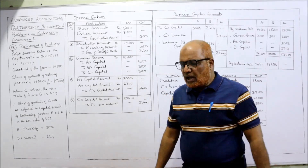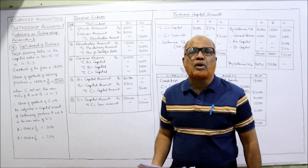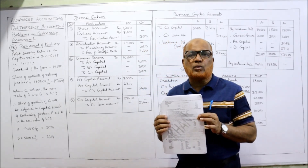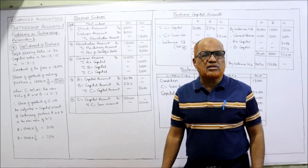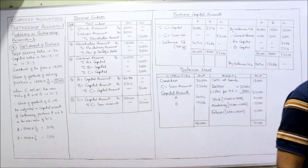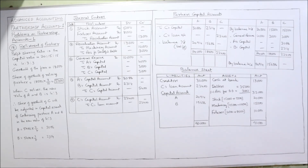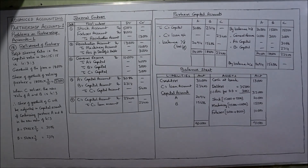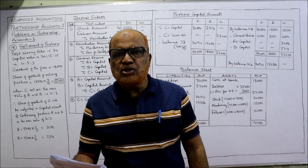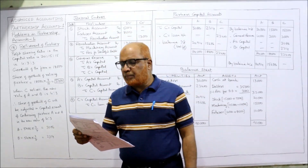Now I'm going to start the 18th problem, which is the first problem on retirement. Before starting, I expect my viewers to have a printout of the problems given in the link under my description — always keep it ready. Now see the 18th problem: the balance sheet of A, B, and C sharing profits in the proportion to capital.